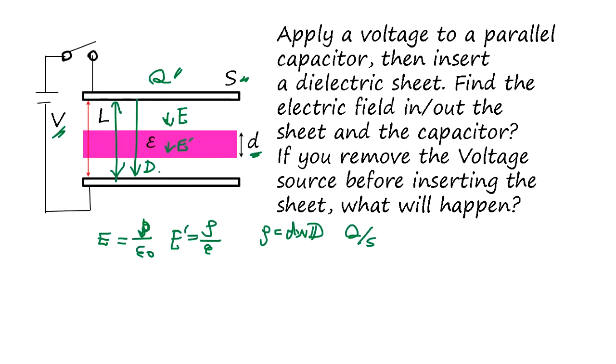The voltage, entire voltage, is going to be, E, L minus D, plus E prime, D, okay? Which is, we multiplied capacitor, and that's going to be Q, right?